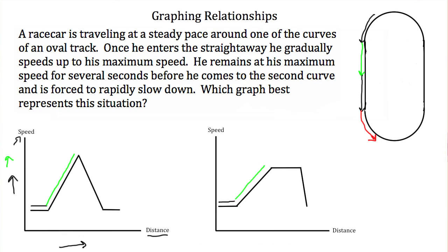Next, he hits his maximum speed and he stays at his maximum speed. So again, his speed is unchanging as he increases his distance around the track. So you would expect another horizontal line representing his unchanging speed.